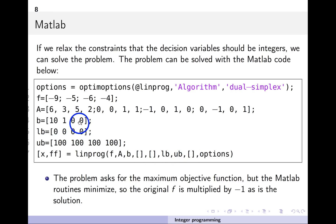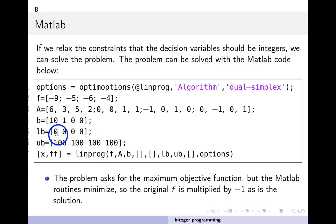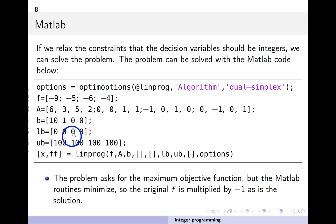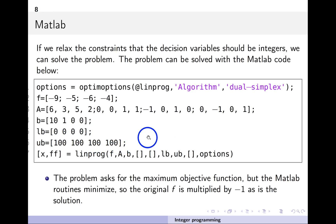The other new thing in this problem is putting bounds on the variables. The lower bounds for x1, x2, x3, x4 are all zero, and the upper bounds are set to 100. This will become more important shortly.